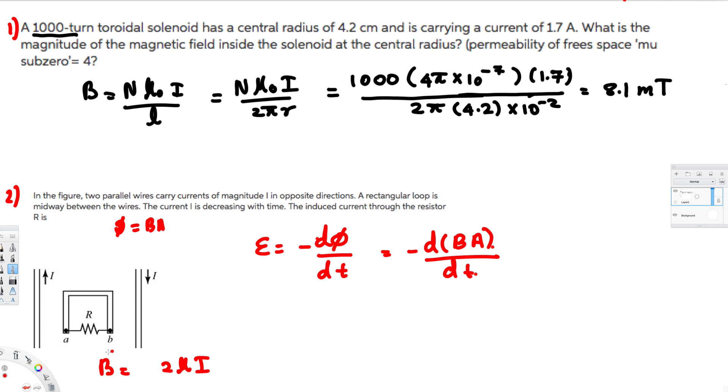We can write this equation as negative 2μI times A d(current)/dt. The only changing variable is current. If the current decreases, magnetic flux also decreases.